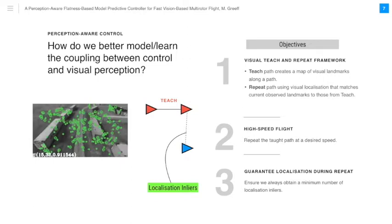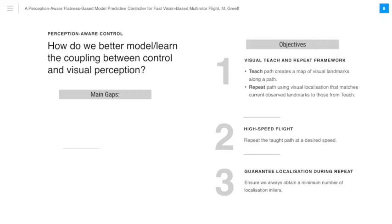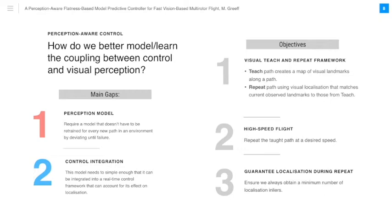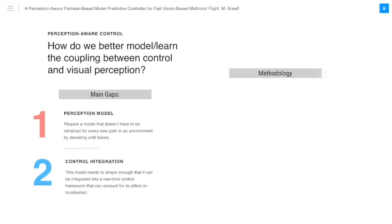There are two main gaps. The first is, practically, we require a perception model that doesn't have to be retrained for every new path in an environment by deviating until failure. And from a control integration perspective, this model needs to be simple enough that it can be integrated into a real-time control framework that can account for its effect on localization. To this effect, our methodology has three key components.